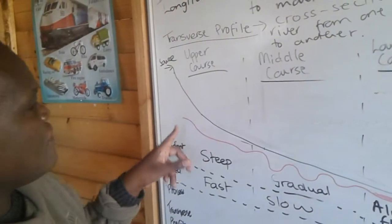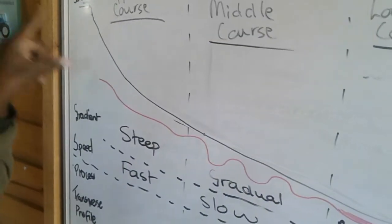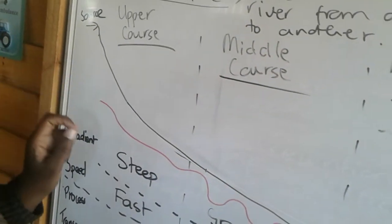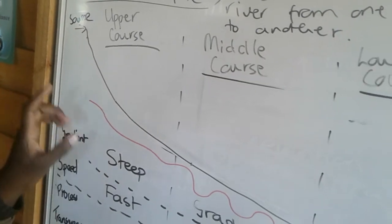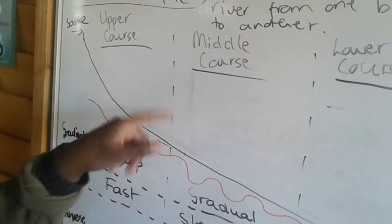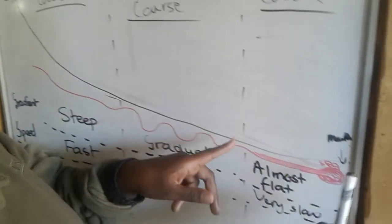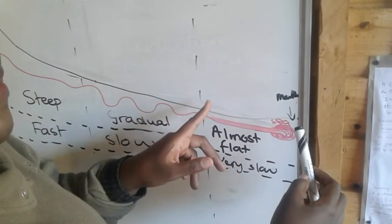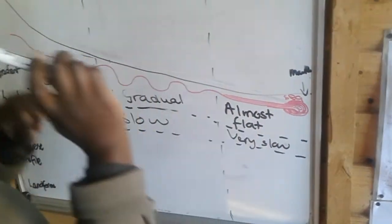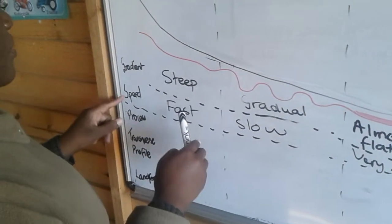In the upper course of the river, the gradient is steep. As rivers flow from high points to low points, in the middle course the gradient becomes gentle, and as you go towards the mouth it becomes very, very gentle — almost flat.